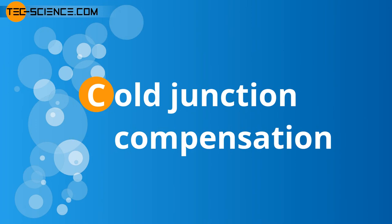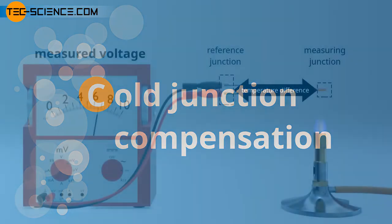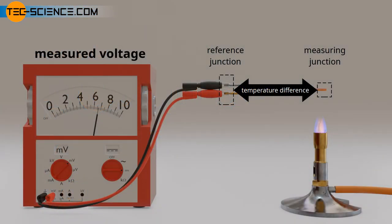Cold Junction Compensation. With the measurement setup described so far, only the temperature difference between the measuring junction and the reference junction can be determined with the measured voltage. To determine the absolute temperature at the measuring point, the temperature at the reference junction must therefore be known. This determination of the temperature at the reference junction, which is also called cold junction, is referred to as cold junction compensation.